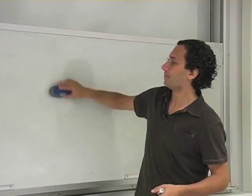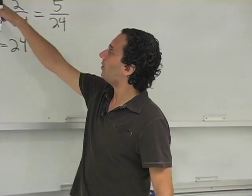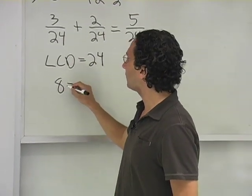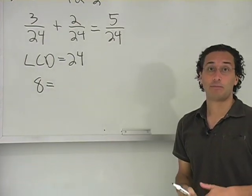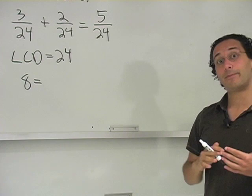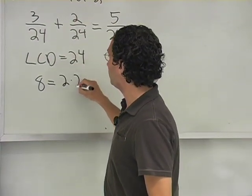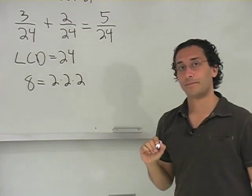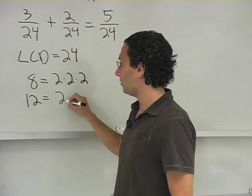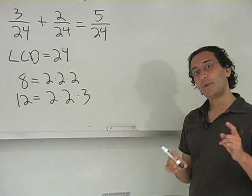So how do we do that? Well, the method that we're going to follow is as follows: we're first going to factor each of those guys into its smallest components, the smallest components being the prime numbers which multiply together to give us that number. 8 is 2 times 2 times 2. 12 is 2 times 2 times 3.